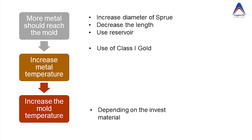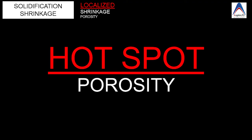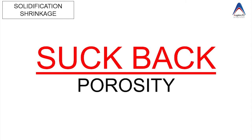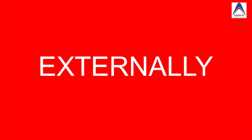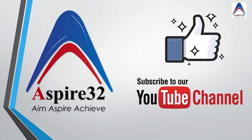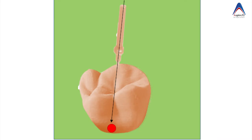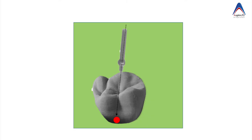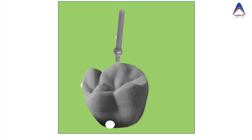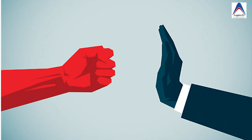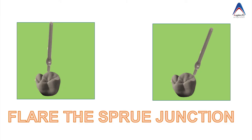There is another variety called hot spot porosity, also known as suck bag porosity, which is seen externally. If the sprue is attached at 90 degrees to the wax pattern, the metal will directly hit the opposite wall of the mold, forming a hot spot — this becomes the last area to shrink with no molten metal available to compensate. To prevent it, make sure the sprue is not attached at 90 degrees and is flared at the thickest portion of the wax pattern to reduce the impact of molten metal on the mold walls.